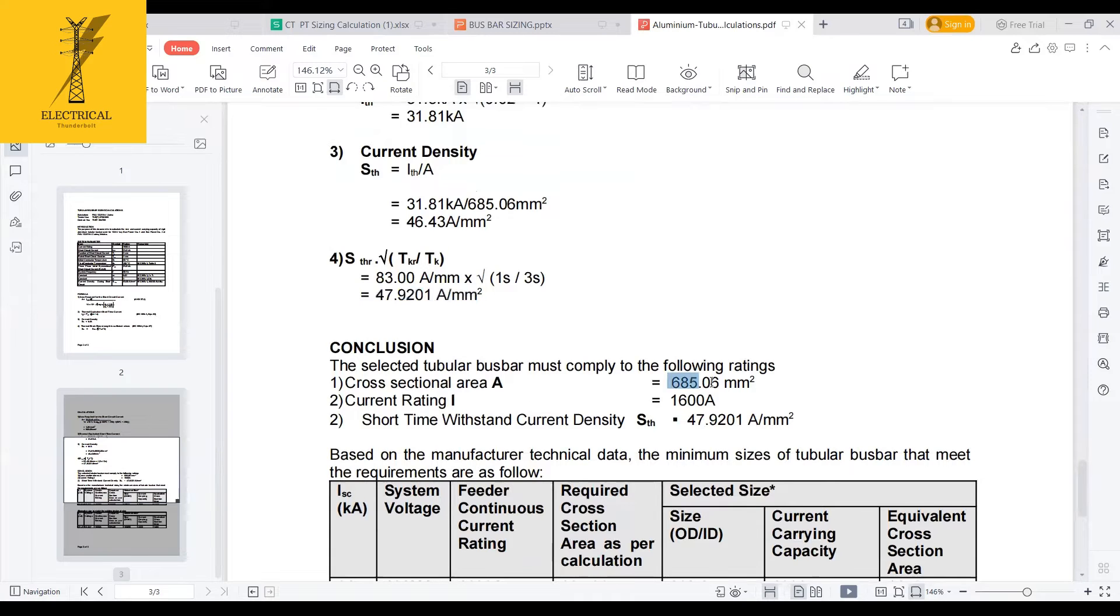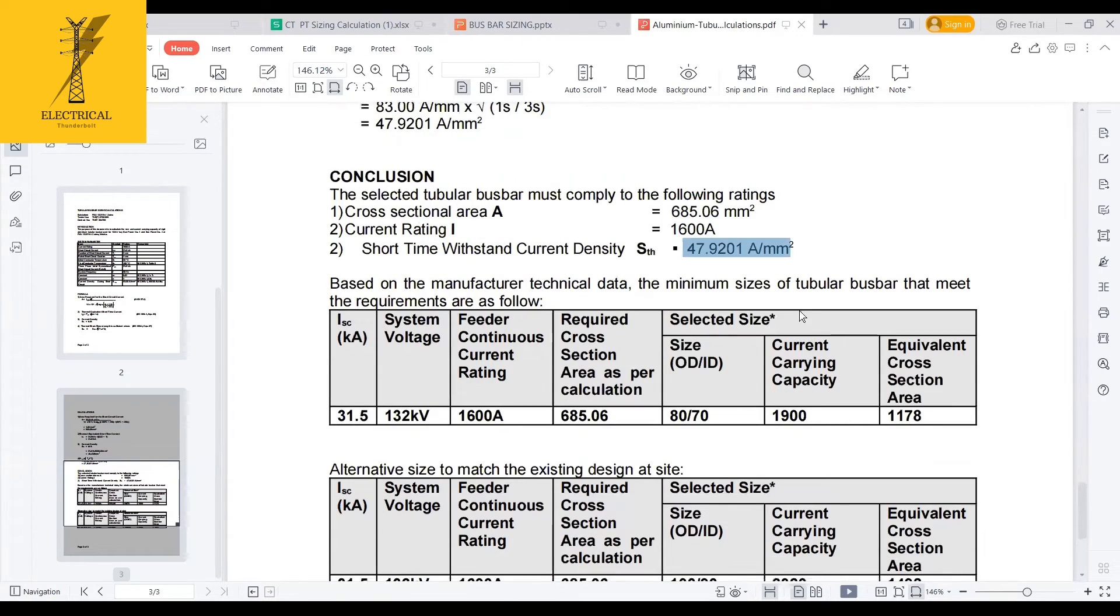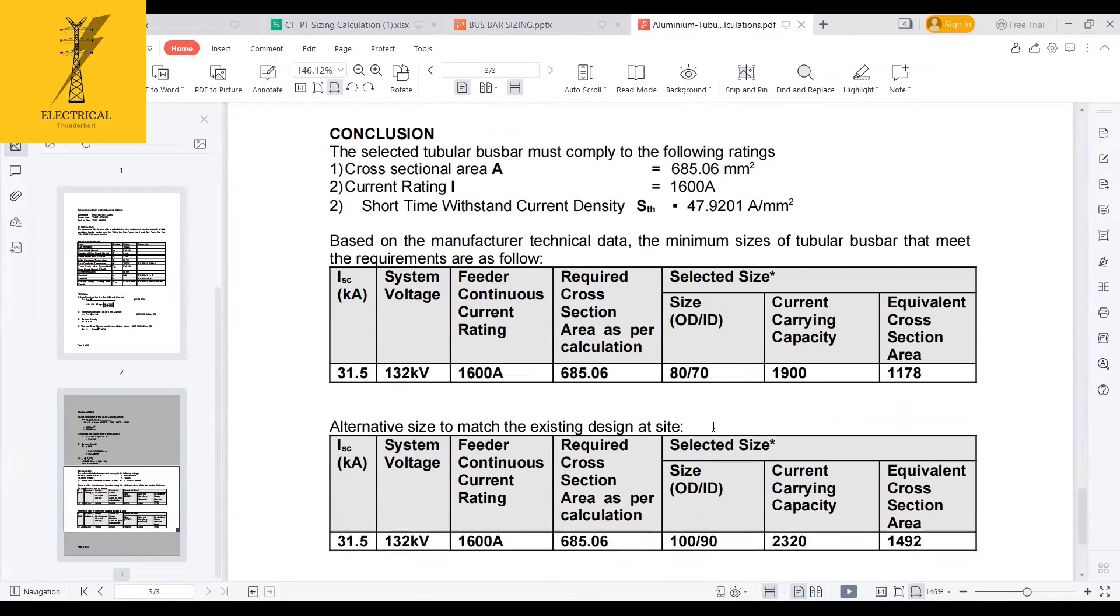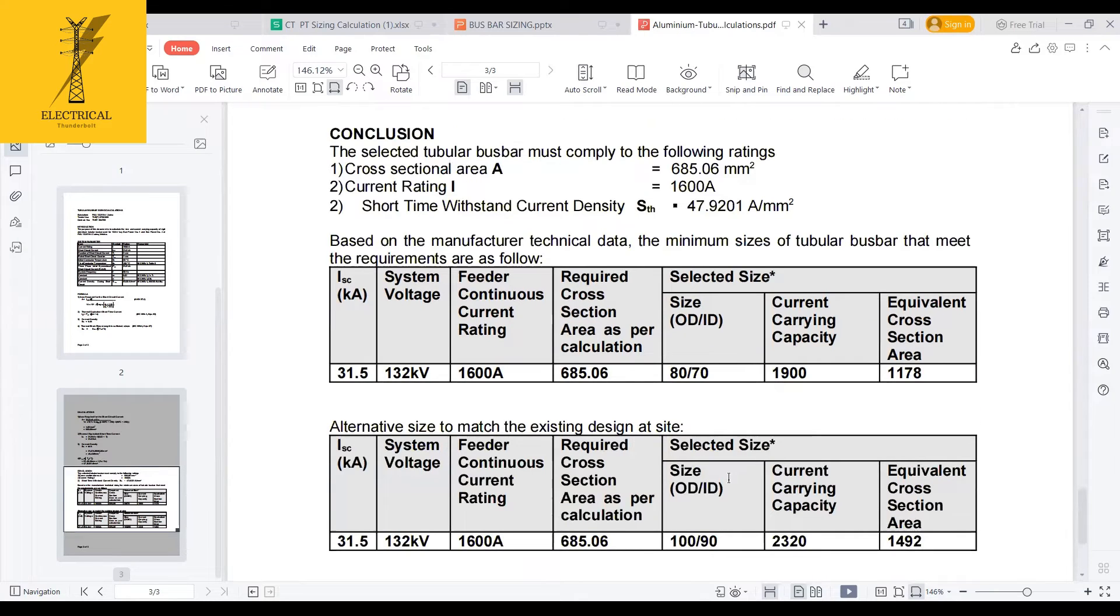So the cross-sectional area required and the current rating is sufficient is 1600 amps, and the short time withstand current is 47. So based on the manufacturer technical data or catalogs, I recommend that minimum size of the tubular bus bar, which is meeting these requirements, is this: outer diameter of 80 and inner diameter of 70. Alternate size to match the existing design at site can also be having this. This is the selection of my conductor only. Any doubts in this stream? Clear?